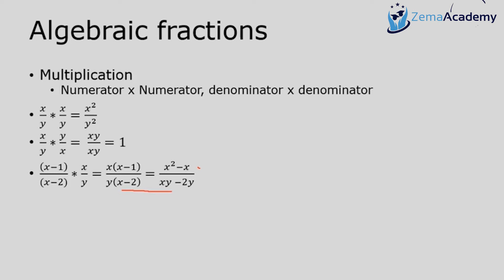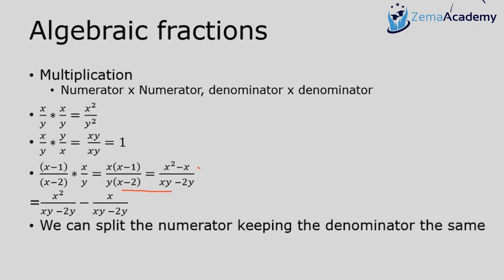At this point I'm stuck and can't simplify further. I could split the fraction into x squared over (xy minus 2y) minus x over (xy minus 2y), though that doesn't help much. The key point is that you can split the numerator while keeping the denominator the same — it doesn't change the meaning. But you can never split the denominator.